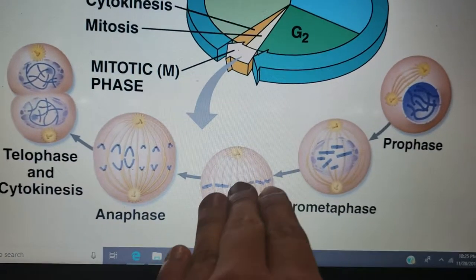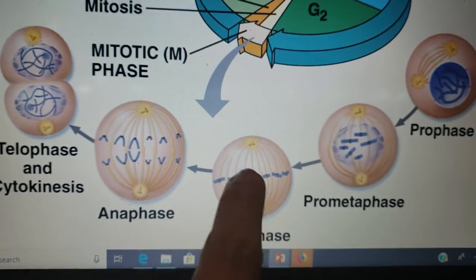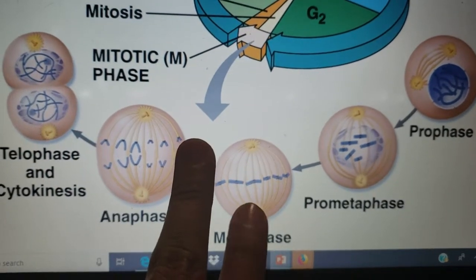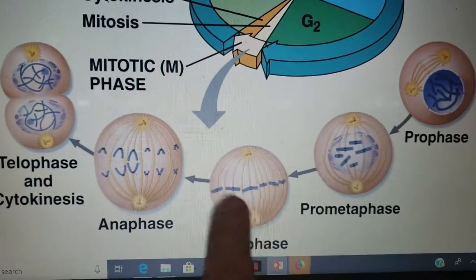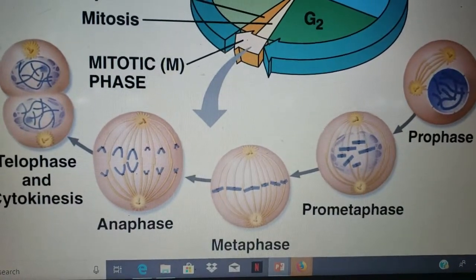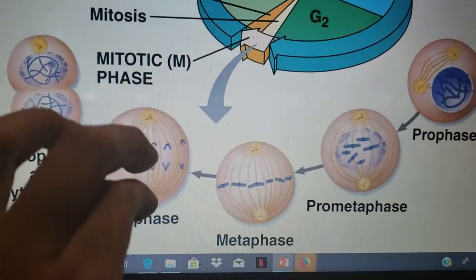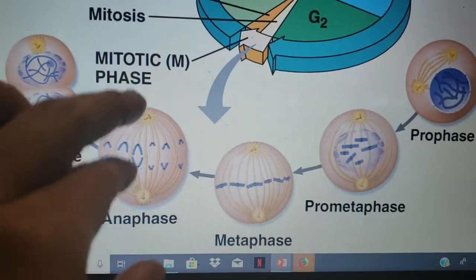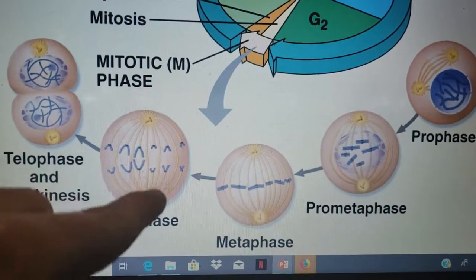In metaphase, two kinetochore spindles will be attached to each chromosome at the center. When we move to anaphase, the chromosomes will separate and move towards both ends of the cell.